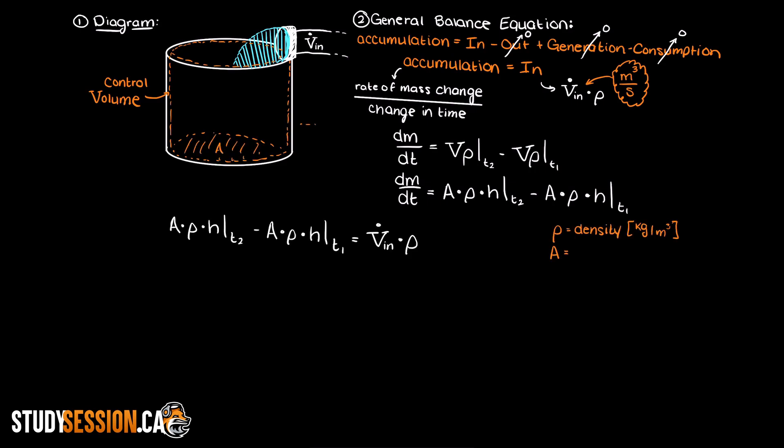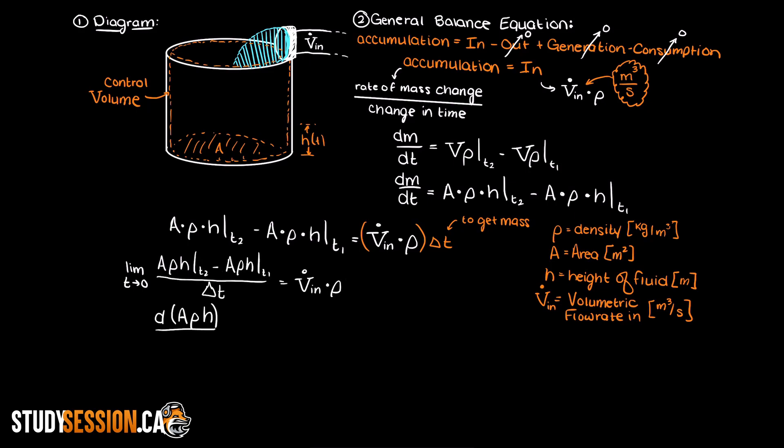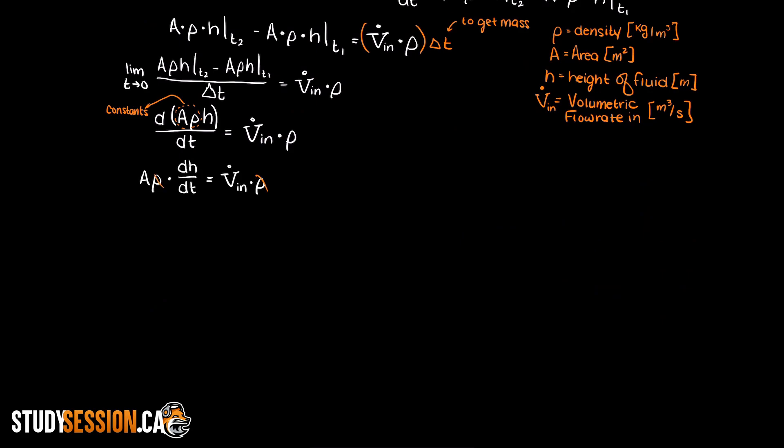Just remember that t2, our second time of interest, is an arbitrary time that we just set to denote some time in the future, therefore we can take the limit as time approaches zero. This will allow us to get an ODE which we can validate and then solve. Therefore the mass balance leaves us with this first order ODE.